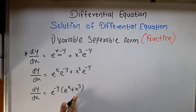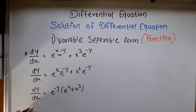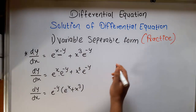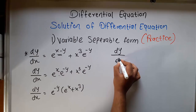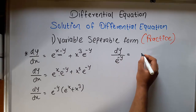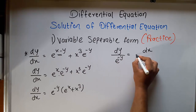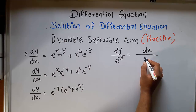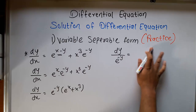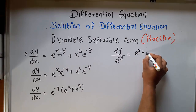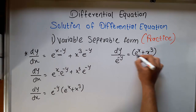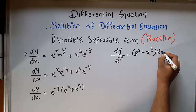This is the function of y and this is the function of x. So for that, we transfer e raised to y to the dy side and dx to the x side. So it becomes: e raised to y dy is equal to (e raised to x plus x cubed) dx.